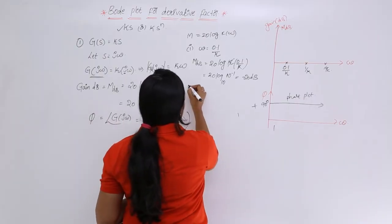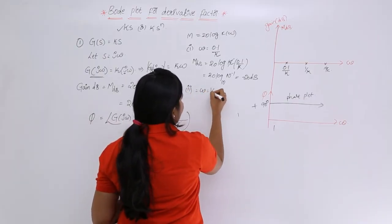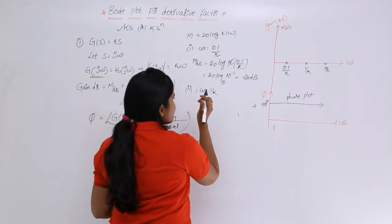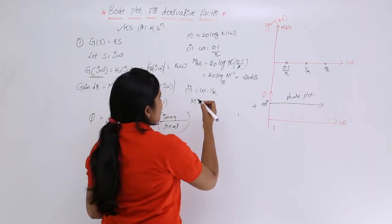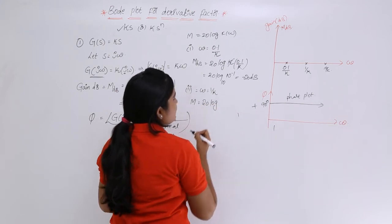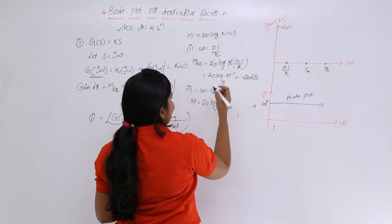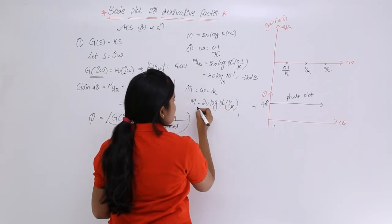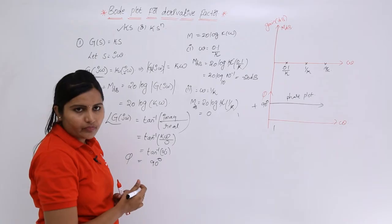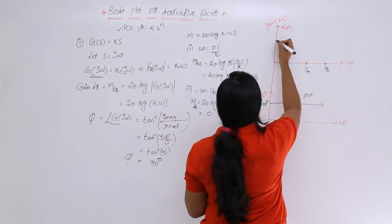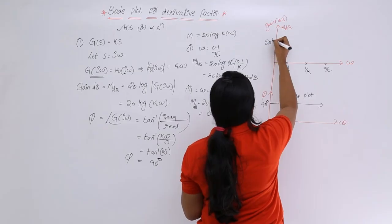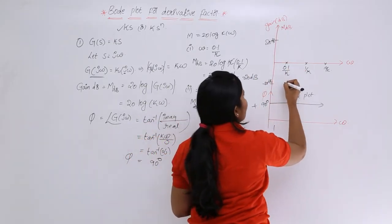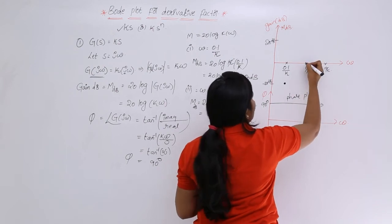At ω = 1/K: M = 20 log(K · 1/K) = 20 log(1) = 0 dB. So at ω = 1/K, the magnitude in dB is 0. We are noting −20 dB at ω = 0.1/K and 0 dB at ω = 1/K.